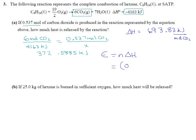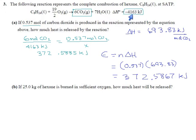The number of moles is 0.537. Delta H we just found: 693.83. That gives 372.58. It looks like I rounded slightly differently and got 671 this time, but once we apply sig figs that won't matter. 4163 has 4 significant digits; 0.537 only has 3. The coefficients are assumed perfect with infinite significant digits. So our answer should have 3 significant digits, which rounds to 373 kilojoules. Both methods give 373 kilojoules — both ways worked fine.